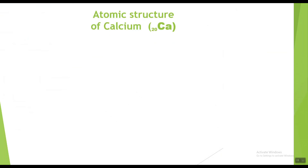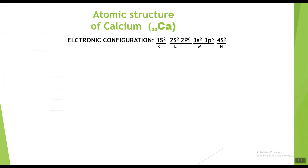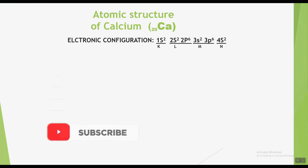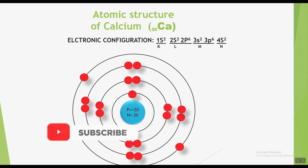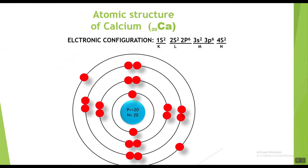Now calcium. The symbol for calcium is Ca with atomic number 20, showing it has twenty electrons. The electronic configuration of calcium is 1s2 2s2 2p6 3s2 3p6 4s2, showing two electrons in the K shell, eight electrons in the L shell, eight electrons in the M shell, and two electrons in the N shell. The atomic structure of calcium shows twenty protons and twenty neutrons in the nucleus, with twenty electrons distributed: two in K shell, eight in L shell, eight in M shell, and two in N shell.